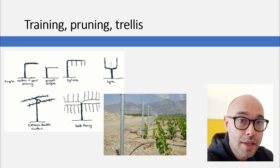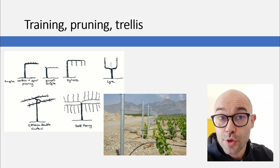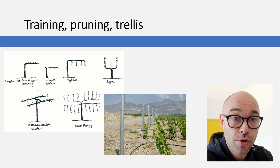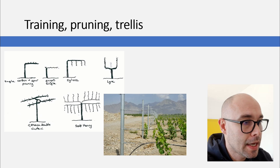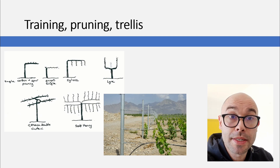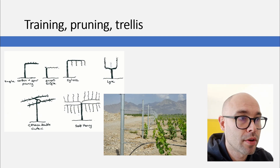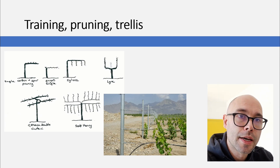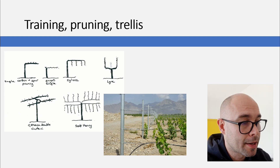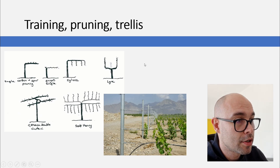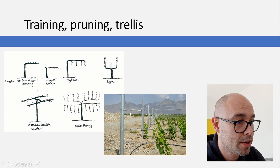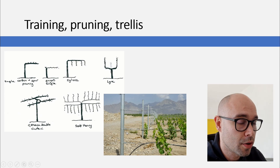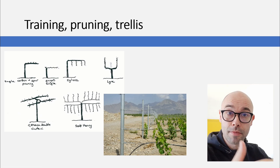There's also one that's not actually a training system but it's called a bush vine — it's not supported by trellis and it's usually used in drier climates. Pruning is the term that describes cutting the woody part of the vine and it shapes how the vine looks. Trellis is the additional support that the vines have in the vineyard; it usually consists of metal wires and poles to which the wires are connected, forming the supporting system for the vines.